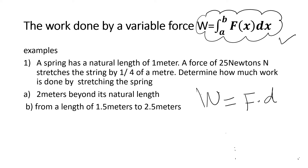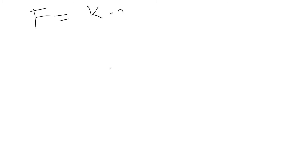Here we have some examples. A spring has a natural length of one meter. A force of 25 newtons stretches the spring by a quarter of a meter. Determine how much work is done by stretching the spring: sub-question (a) two meters beyond its natural length, and sub-question (b) from a length of 1.5 meters to 2.5 meters. The force in a spring is equal to the spring constant k times x — this is known as Hooke's Law.